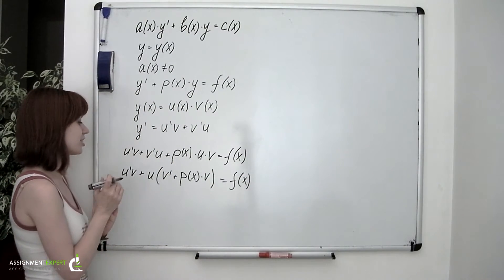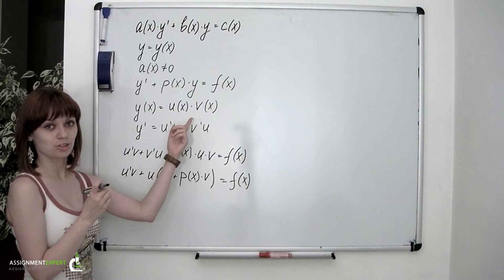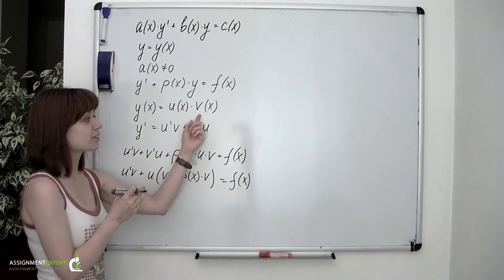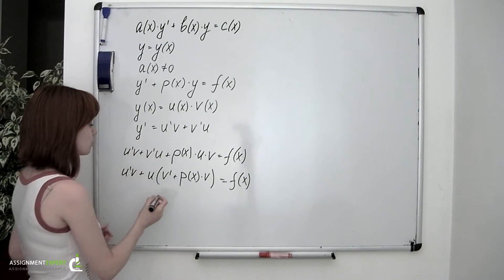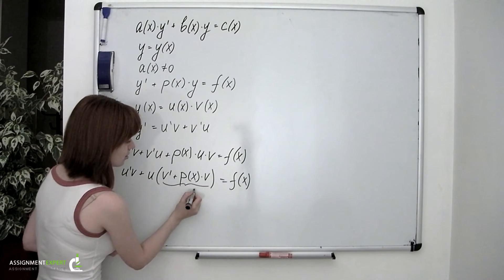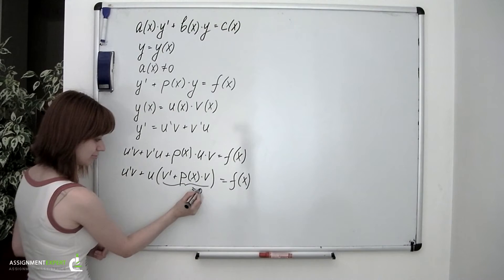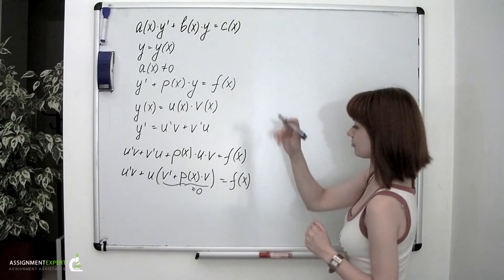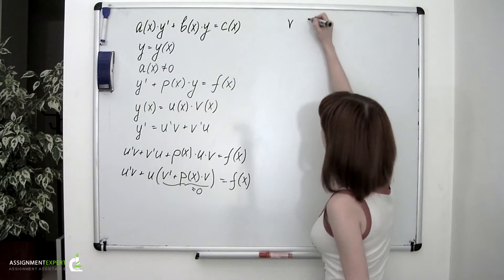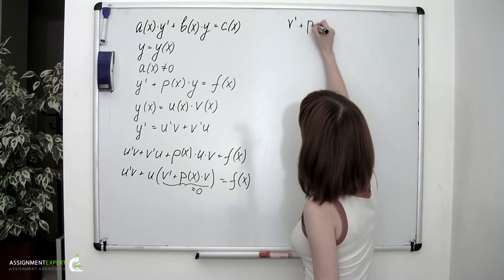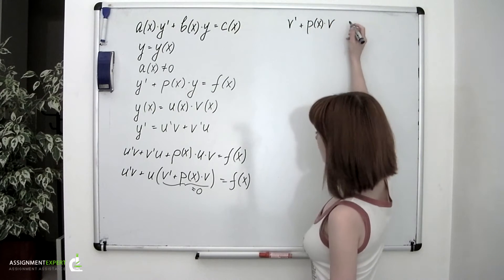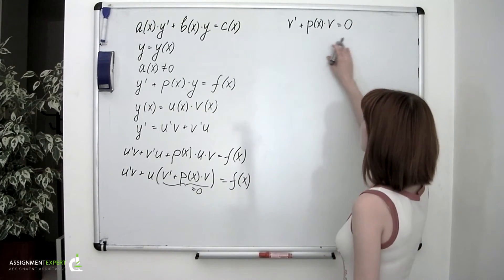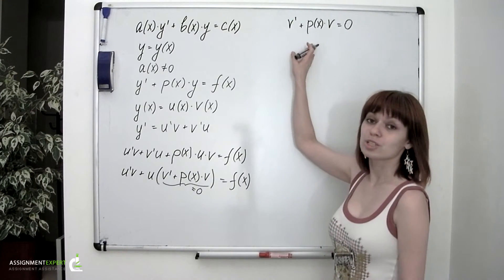Obviously, to solve this equation we need to find both U and V functions. Since we have no particular restrictions on these functions, let's choose the V(x) function so that the expression within the brackets equals zero. That gives us another equation to discuss: V' plus P(x)·V equals zero. If we look at it closely, we see that this is, in fact, an equation with separable variables.